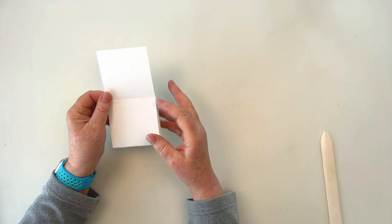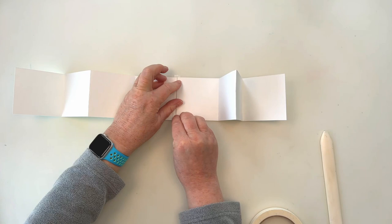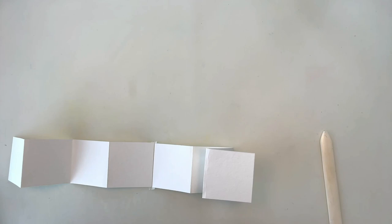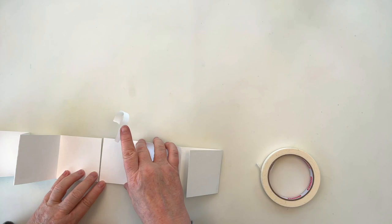Now what we'll do is put several of these together to make our book. To do that I'll put two sections down next to each other, line them up, and just put a piece of tape along this join. It helps to leave just a little gap in between so that the pages will fold more easily, and I usually tape both the front and the back. And then just trim off any excess tape.